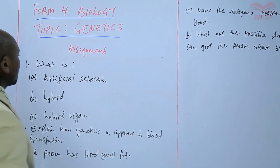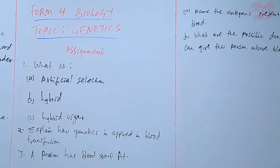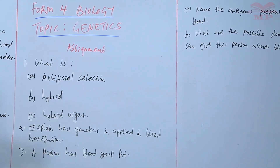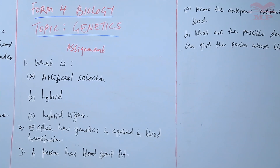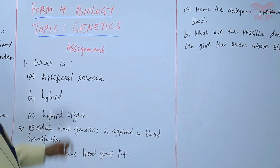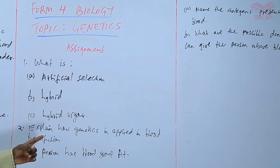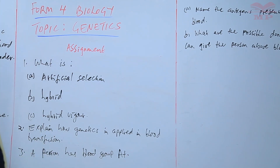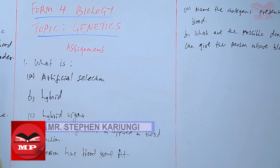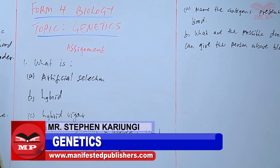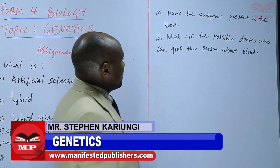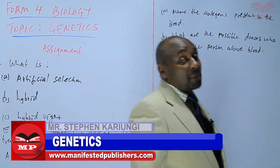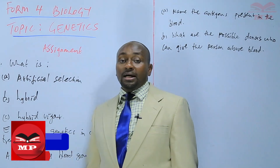For the assignment: Question one — A) What is artificial selection? B) What is a hybrid? C) What is hybrid vigor? Question two — Explain how genetics is applied in blood transfusion. Question three — A person has blood group A positive. A) Name the antigens present in the blood. B) What are the possible donors who can give the person above blood? We will stop there until next time. Thank you.